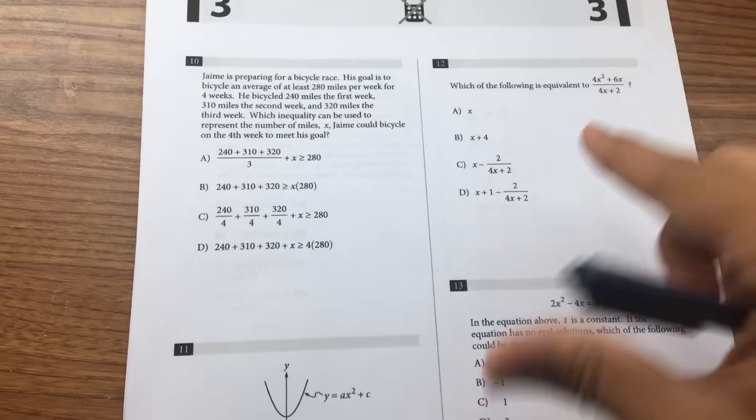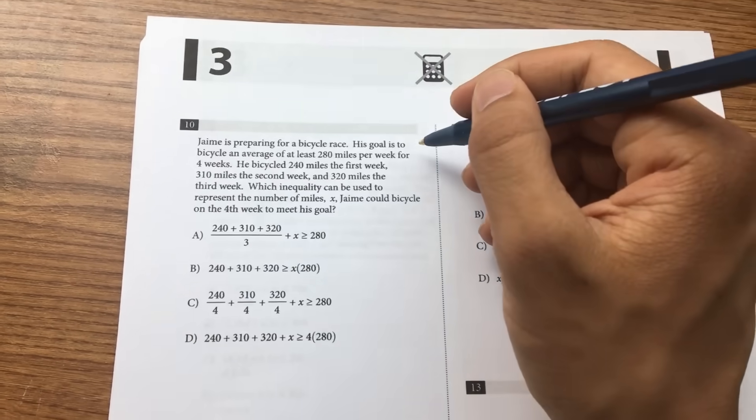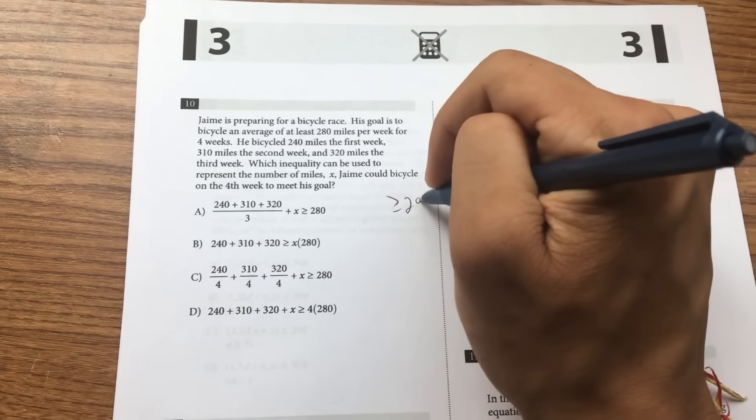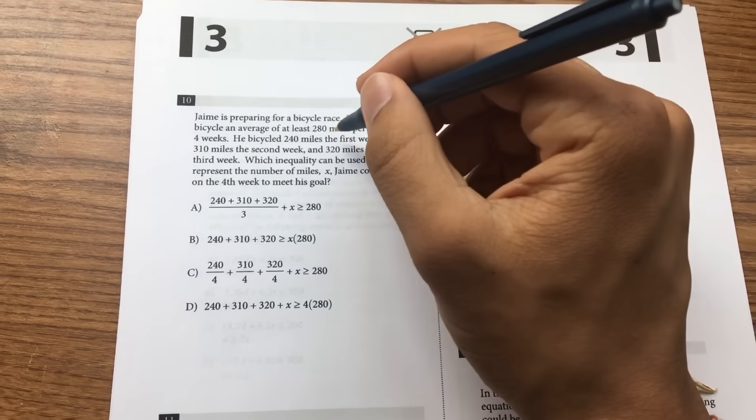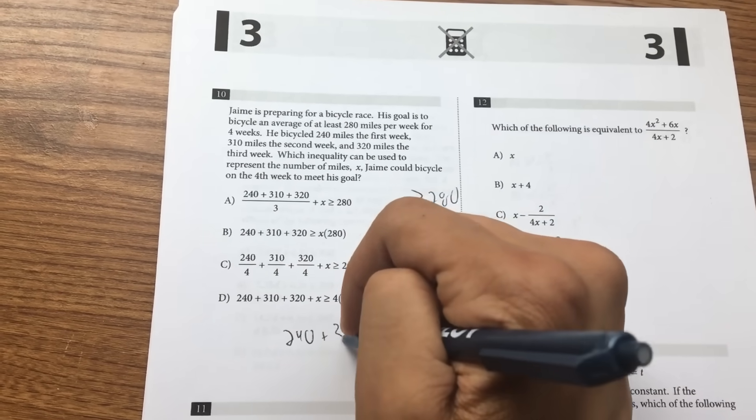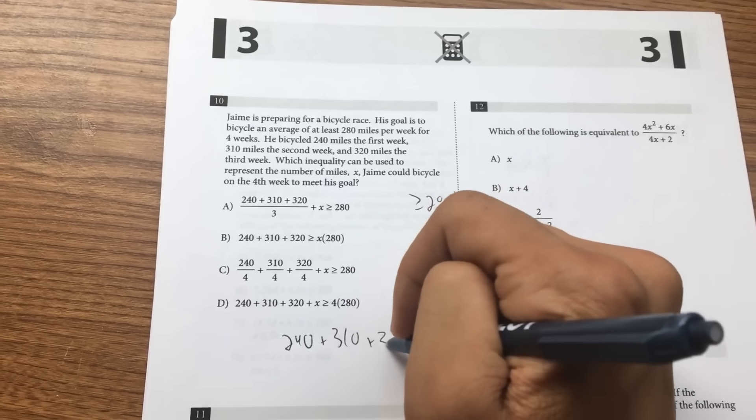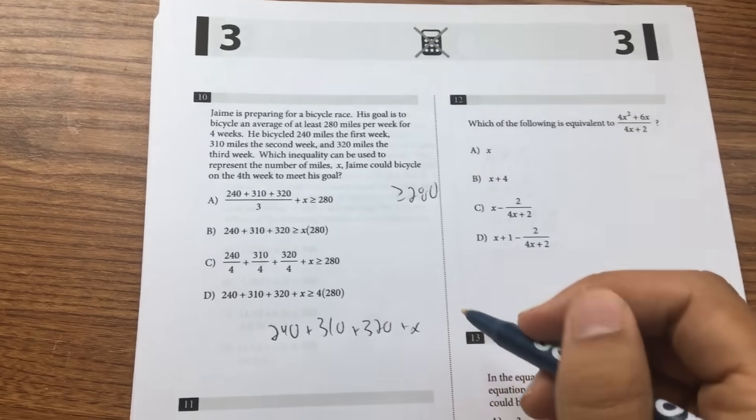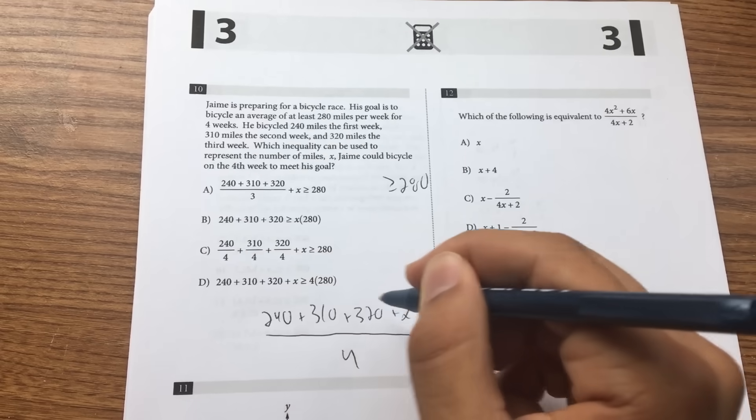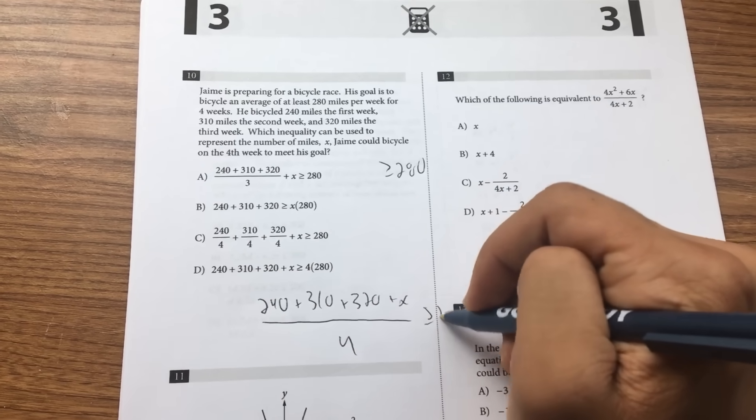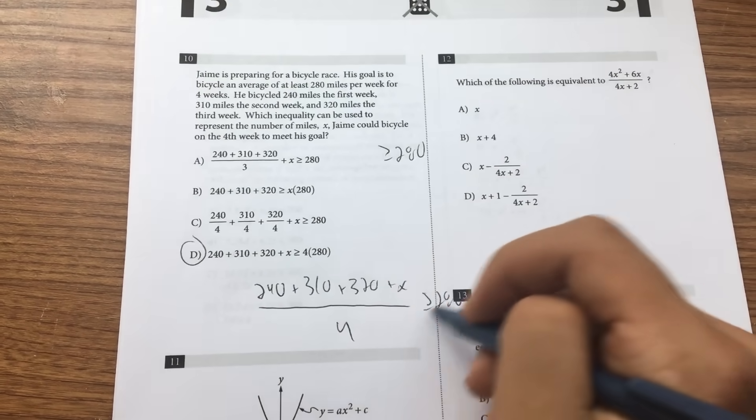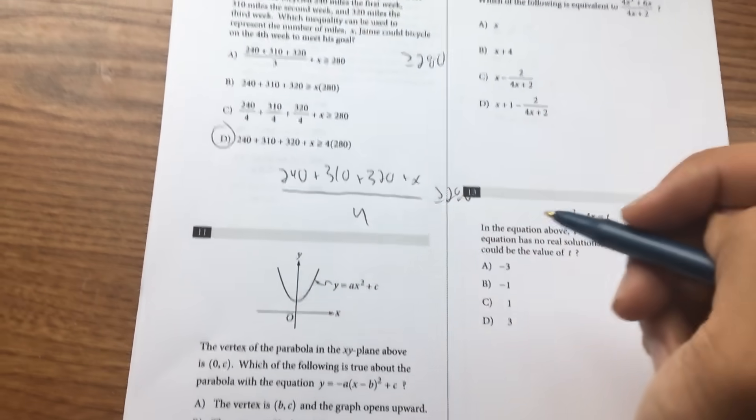Why he's going average of at least 280 miles, so at least 280. 240 first week, 310 second week, 320 third week, and x the fourth week, divided by 4 since this is average and there's four weeks, is greater than or equal to 280. That matches this. This is just multiplied by 4 both sides.